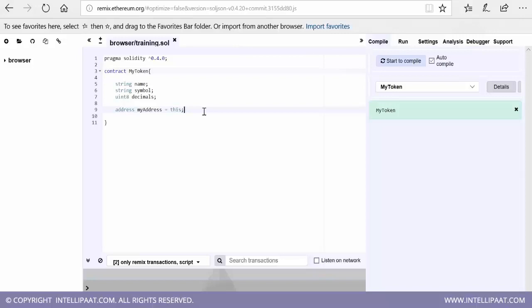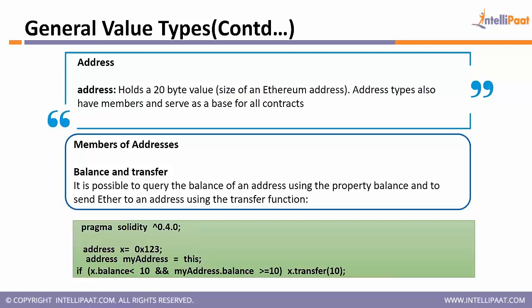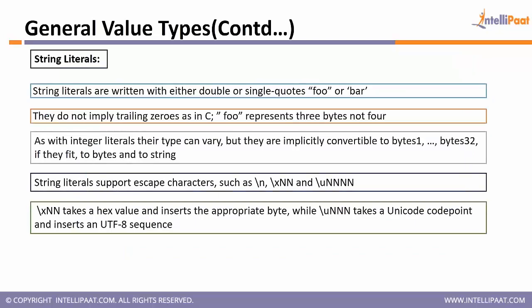This is how you can store the address of your wallet within this elementary type. The address type comes with two members: one is balance, in case you want to know the balance of your current wallet, and the other is transfer. With the transfer member you can transfer an amount of tokens from your wallet to someone else's wallet.